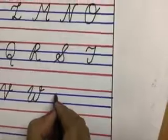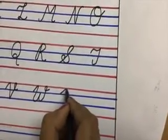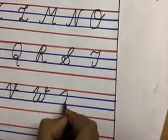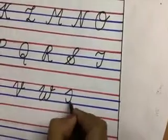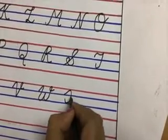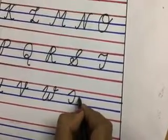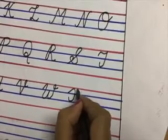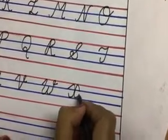Now make from the second line like this, and from the first you need to make like a C. This is cursive capital X.